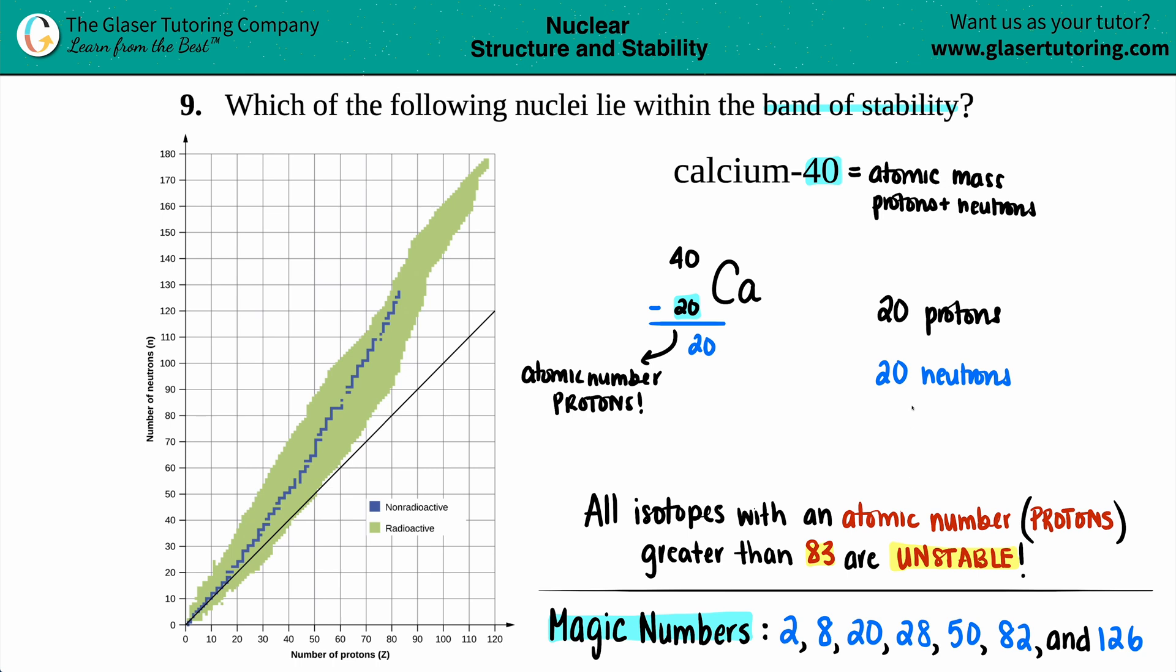So in this case, both of them, I see that we got 20s, 20s all around, double magic. So we know that this compound, is it going to be in the band of stability? Absolutely, yes.